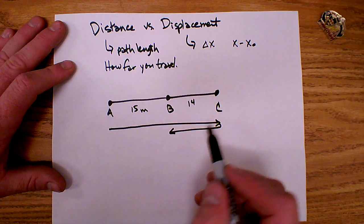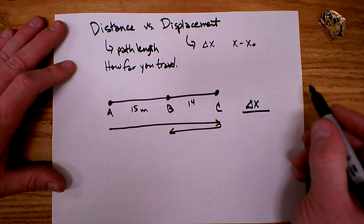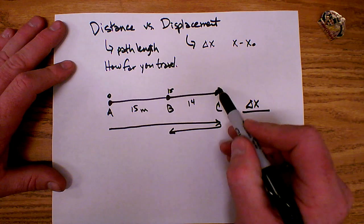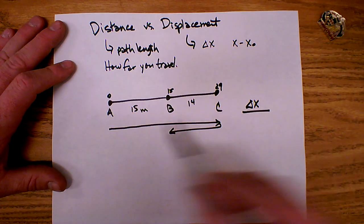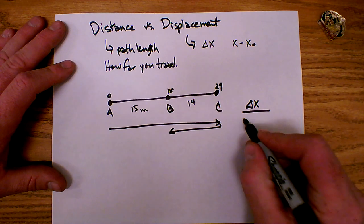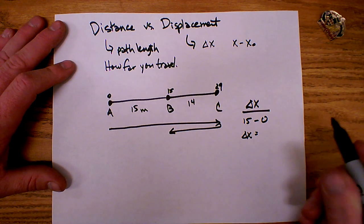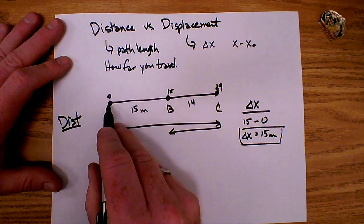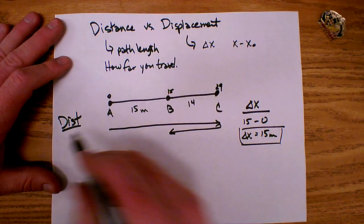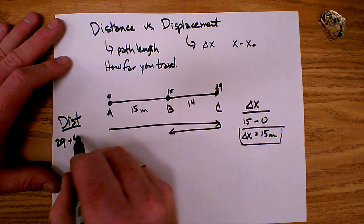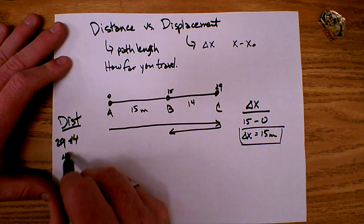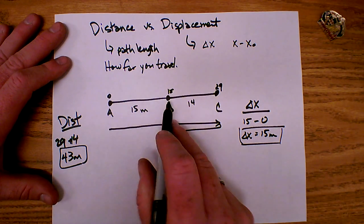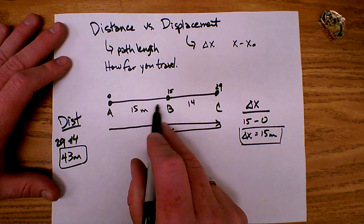Say I started at A, went to C, and then turned around and came back to B. My displacement — my change of position — if I started at A (position 0) and ended at B (position 15), my delta x would be 15 meters. My distance traveled would be: I traveled 29 meters on the way out, and 14 meters on the way back. So the distance I traveled was actually 43 meters — that's how far I traveled in my whole trip from A to C and back to B. Whereas my displacement, how far I am at the end from where I started, is simply 15 meters.